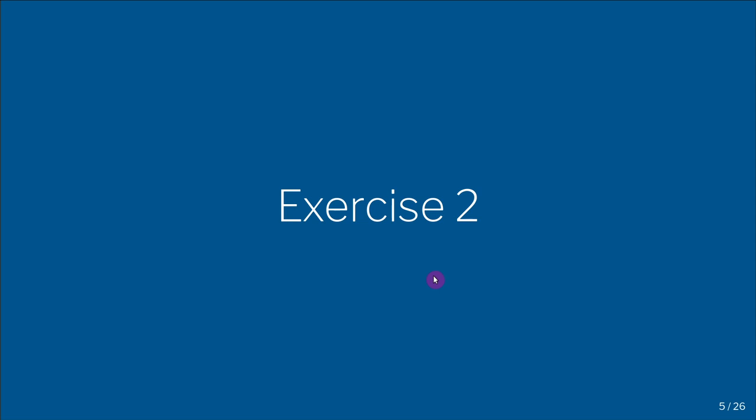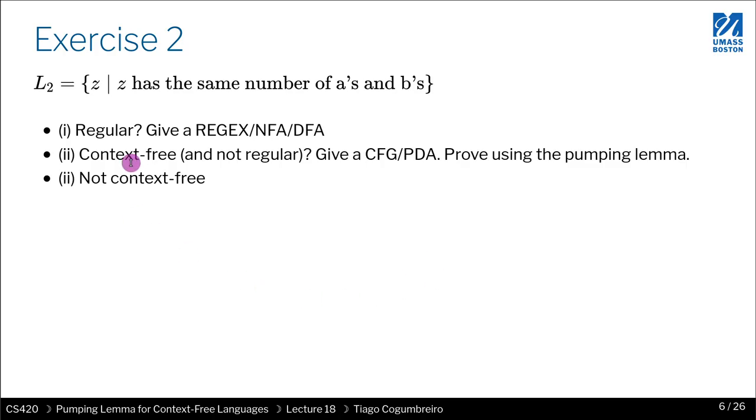Okay, so now for exercise two, let's look at what the language is. The language is saying that Z has the same number of A's and B's. So try to think, is this language regular? And if it is not, is it context-free? And if it is not, is it not context-free? Please pause the video and try to answer yourself.